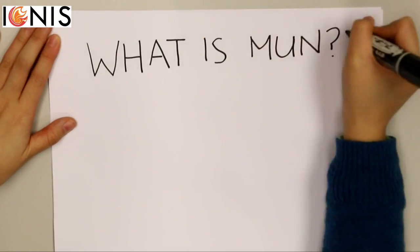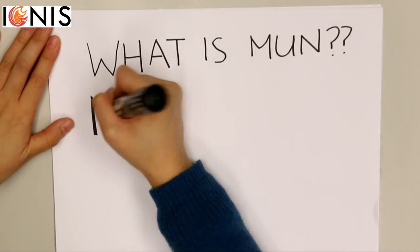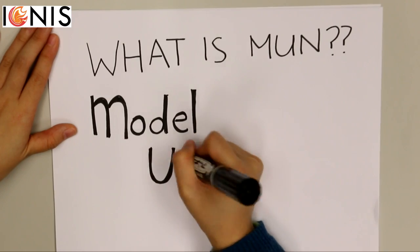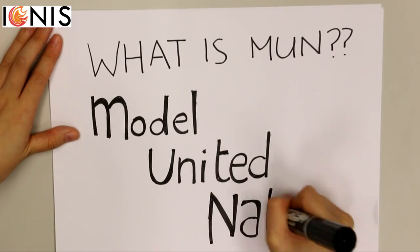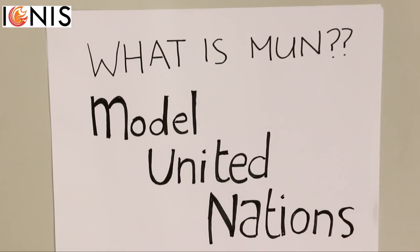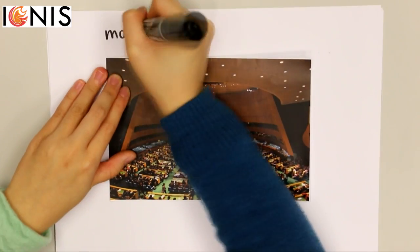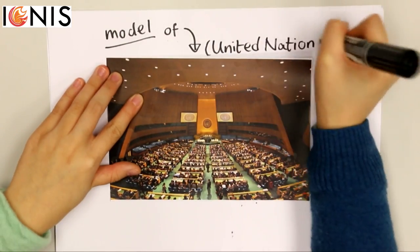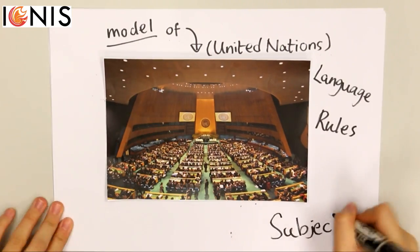So what's MUN? MUN stands for Model United Nations. As its name suggests, it's a model of the United Nations. We take on the language, the rules, the courtesies, subjects, and even the clothes of the UN.